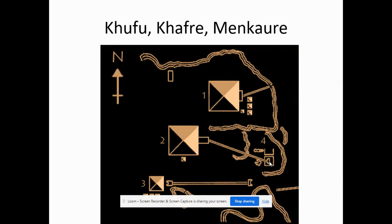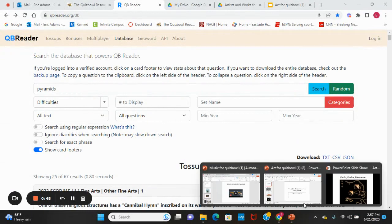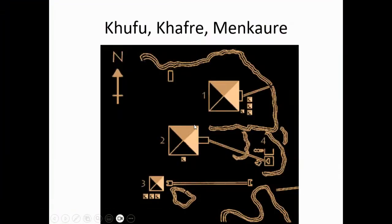Remember that ancient Egyptian history is divided into the Old Kingdom, the Middle Kingdom, and the New Kingdom — and these are all Old Kingdom. They began as a monument to the dead pharaoh but essentially functioned as an advertisement to come and plunder. The largest one is that of Khufu, then Khafre, and Menkaure.